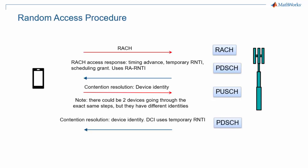In the final step, the GNodeB acknowledges the contention resolution message by sending back the device identity in a message encrypted with the temporary RNTI. The UE that recognizes its device identity knows that it has been acknowledged by the GNodeB and uses the temporary RNTI from now on.